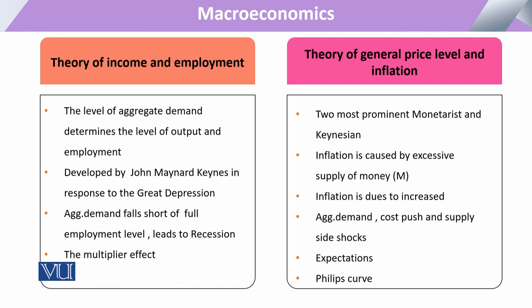The second theory is the theory of general price level and inflation. This theory encompasses many parts: inflation, aggregate demand, supply-side shocks, expectations, and most importantly the Phillips curve — the relationship between wage inflation and unemployment — which represents the actual decisions and problems every economy faces daily.